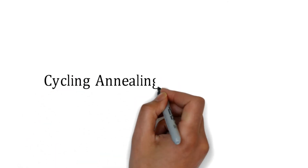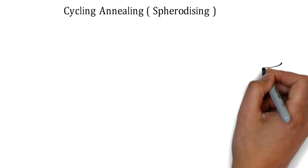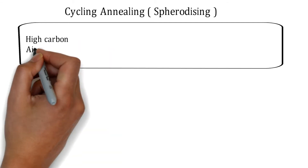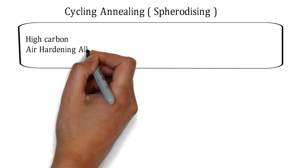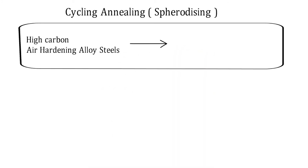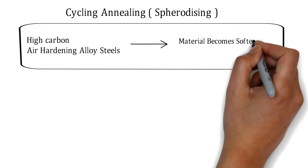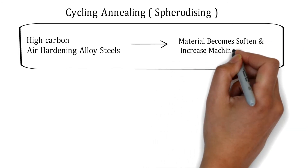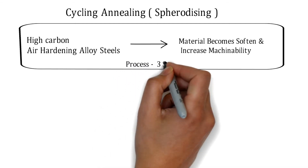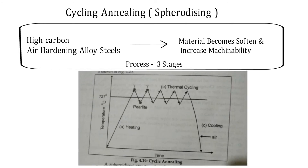The next process is cyclic annealing, also called spheroidizing. This particular process is carried out for high carbon air-hardening alloy steels, to make the material soft and to increase its machinability.